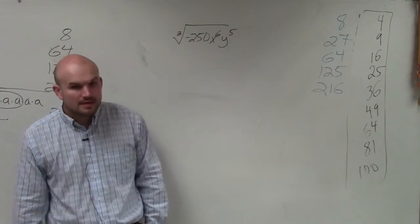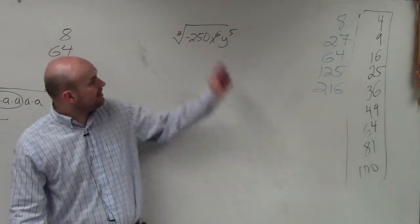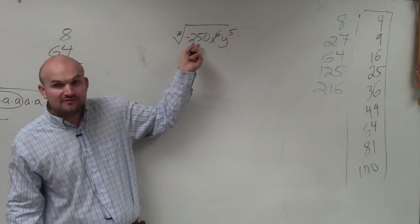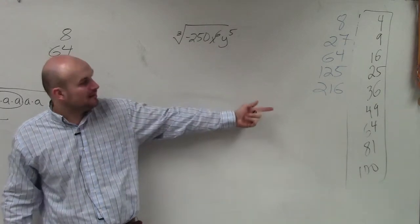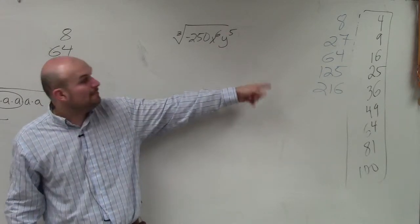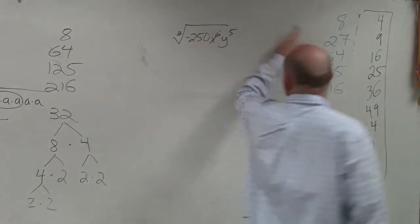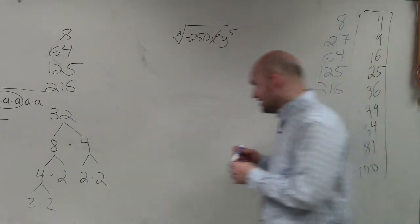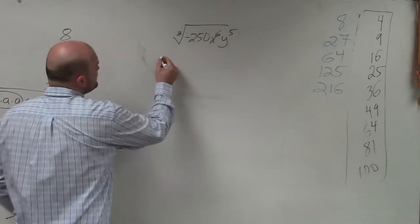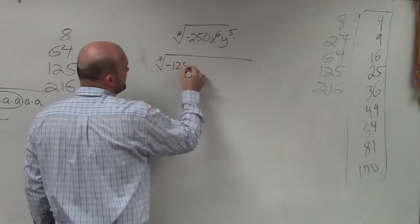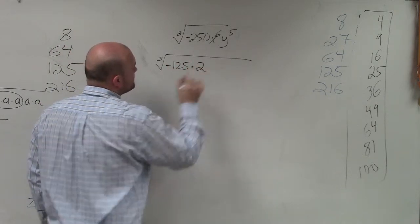Alright? So now, what I'm going to want to do is rewrite all of these terms as a term of cube numbers. You guys notice that 250 is not going to be a cube number. Actually, I don't know what 7 cubed is off the top of my head, but I know it's not 250. But do any of these numbers divide into 250? 125. So what I can do is rewrite this as the cube root of negative 125 times 2.